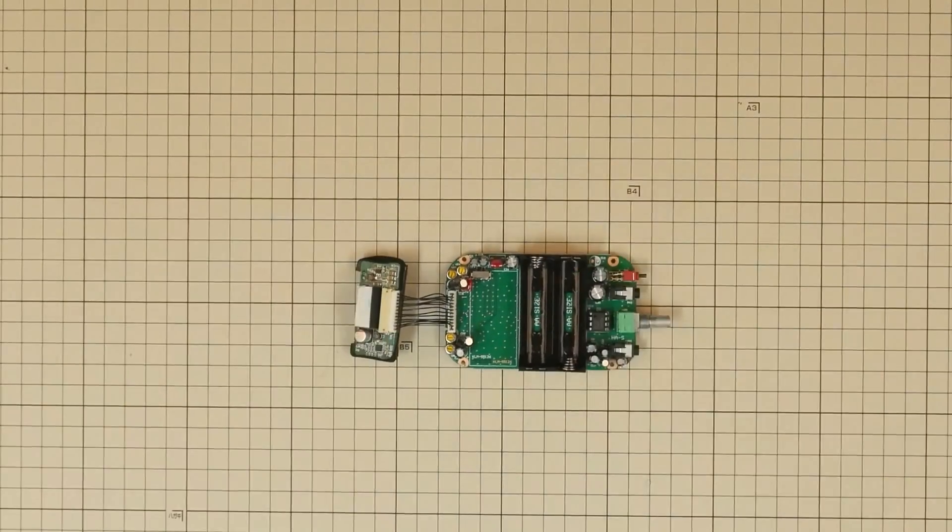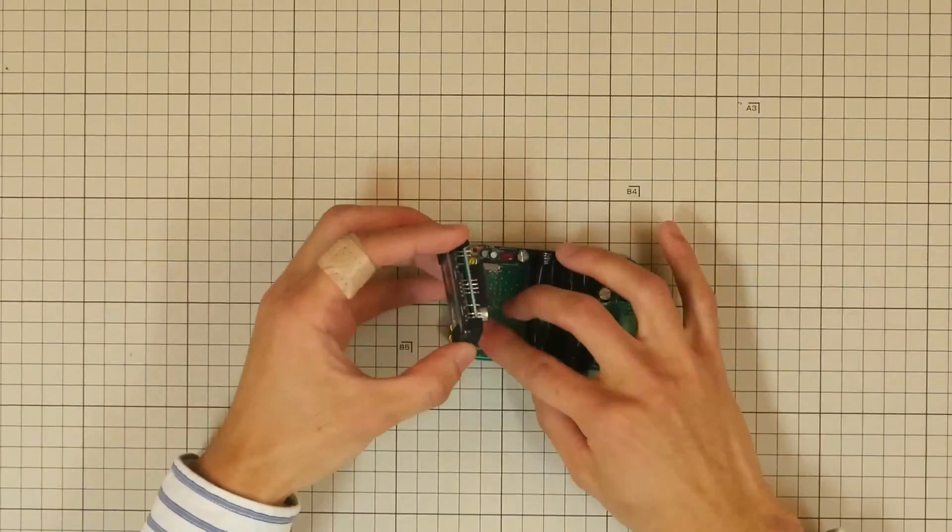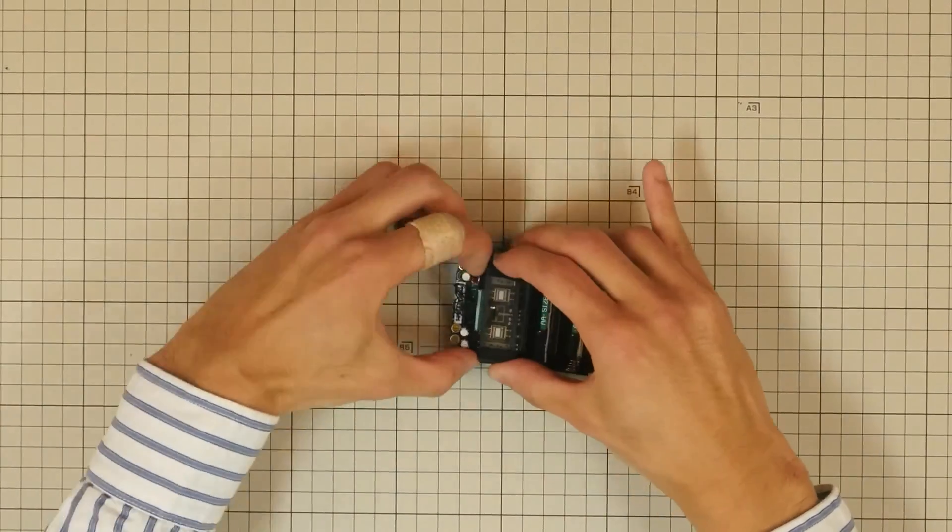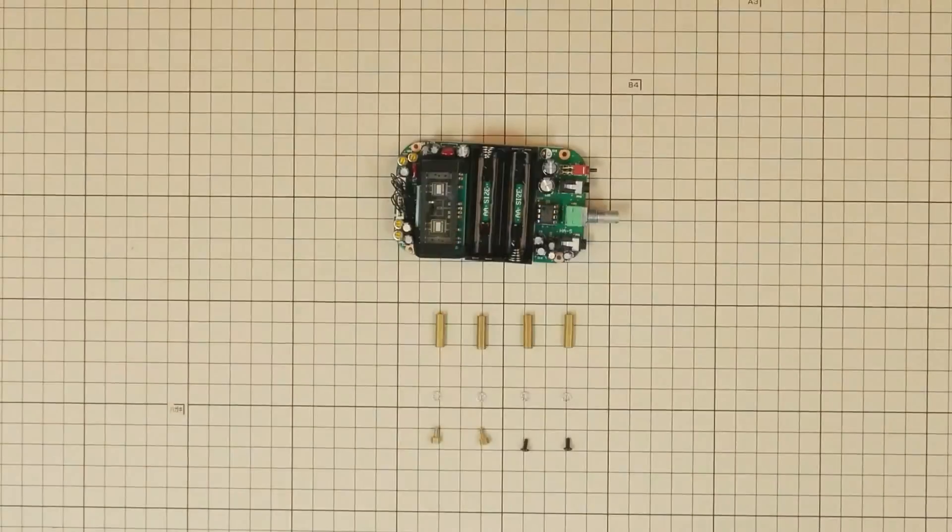Then remove the release paper on the cushion that's on the back of the NewTube circuit board and attach that NewTube circuit board to the main circuit board. This ensures the NewTubes are protected from unwanted contact with other components.